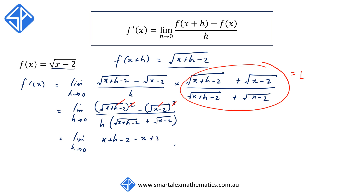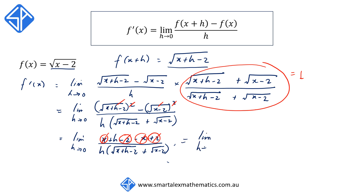Remember the negative sign will apply to the negative 2 and convert this to a plus 2. All of this is over h times the square root of x plus h minus 2 plus the square root of x minus 2. We're now going to collect like terms — the x cancels with the negative x, and the minus 2 and the plus 2 cancel out as well. This leads us to the limit as h approaches 0 of h over h times the square root of x plus h minus 2 plus the square root of x minus 2.